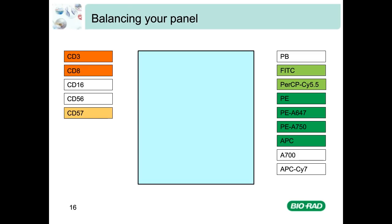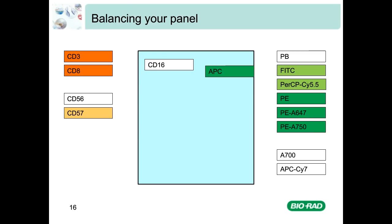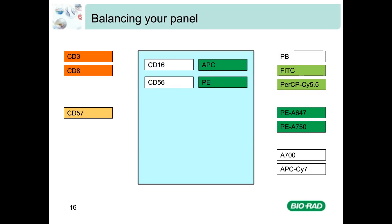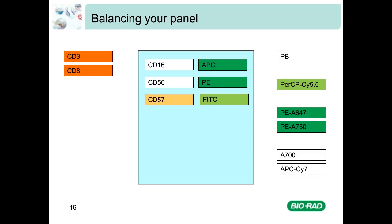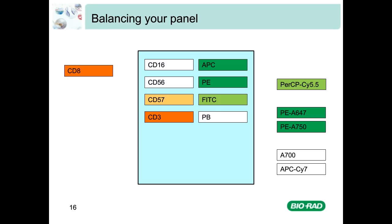A suggestion when balancing your panel is to start with the low-expressing antigens, as it is most important that they get paired with the bright fluorophores. If we start with CD16, a low-expressing antigen, we can pair it with the bright APC. Then we take CD56, also a low-expressing antigen, and pair it with the bright PE. Moving on to the moderate antigen CD57, we pair it with the moderately bright FITC. For the high-expressing antigens CD3 and CD8, we have more flexibility — we pair CD3 with Pacific Blue and CD8 with PE-Alexa Fluor 750. And now our second panel is complete.